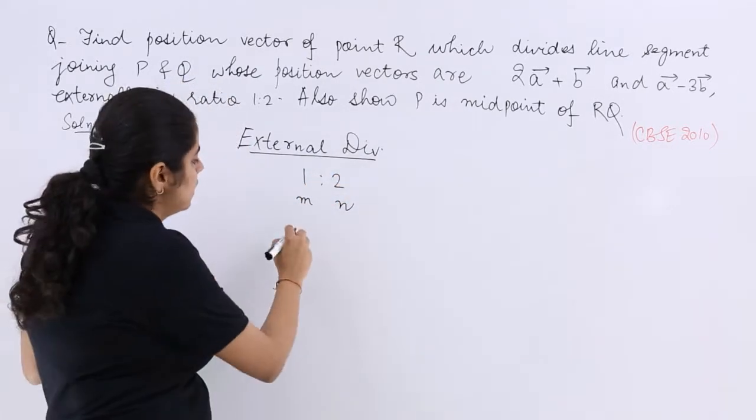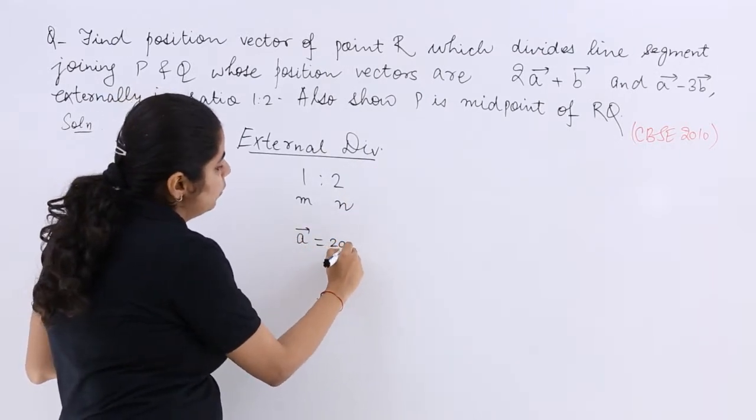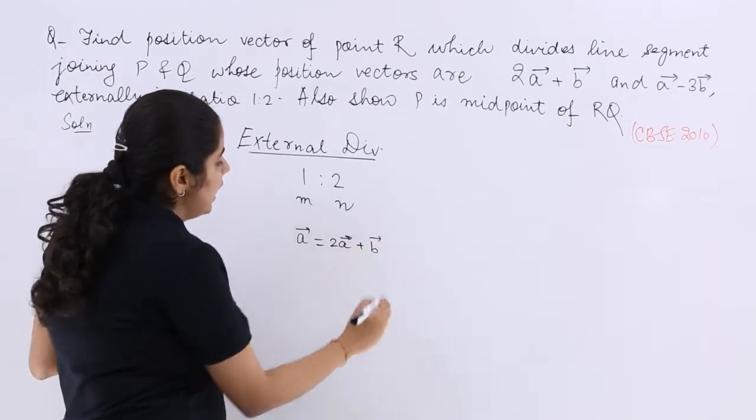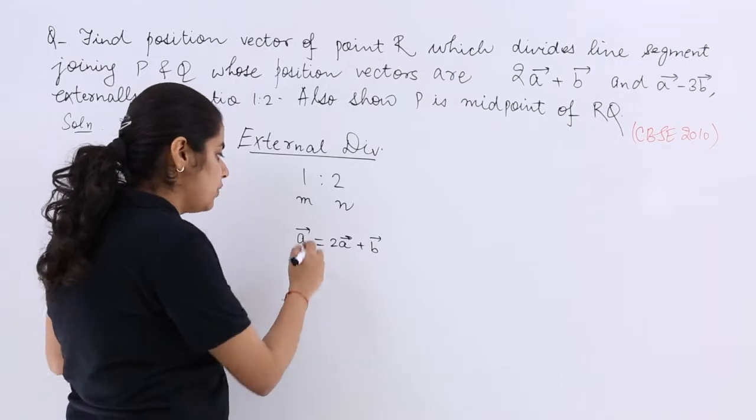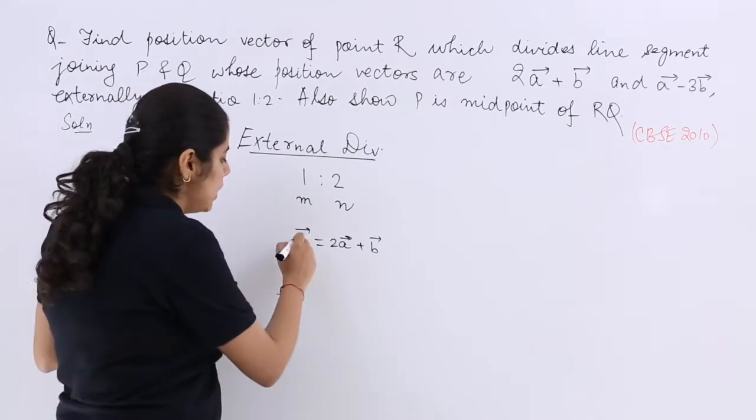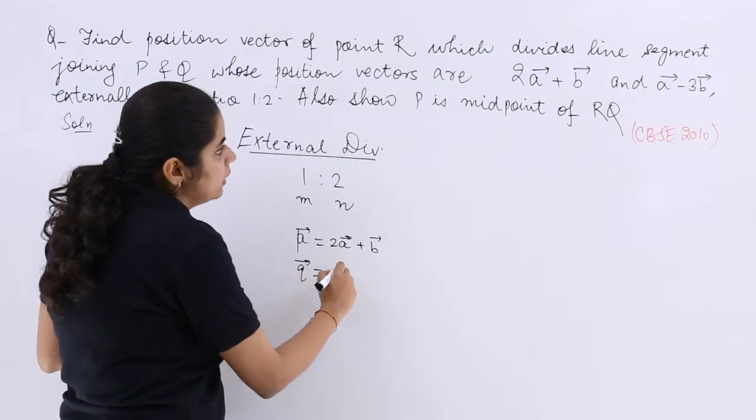Also you have been given your A vector is equal to 2A plus B vector. A vector according to the formula. Since we will be getting confused with the formula if I write here A vector only.